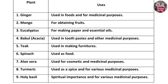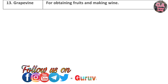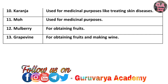Eighth, turmeric — used as a spice and for various medicinal purposes. Ninth, holy basil — spiritual importance and for various medicinal purposes. Tenth, karanja — used for medicinal purposes like treatment of skin cancer. Eleventh, moha — used for medicinal purposes. Twelfth, mulberry — for obtaining fruits. Thirteenth, grape vine — for obtaining fruits and making wine. Here we completed our fourth question.